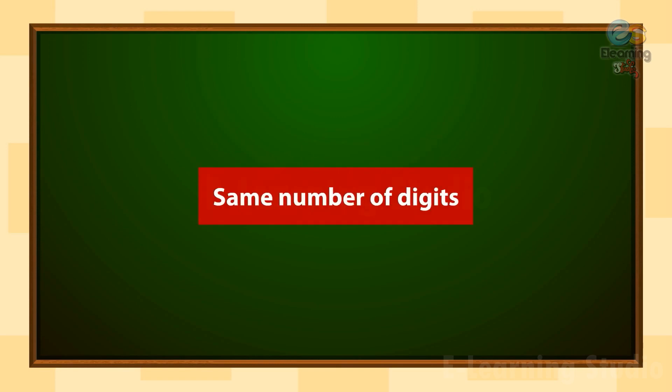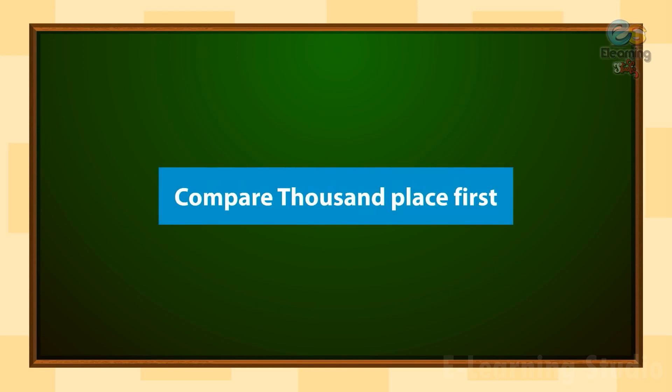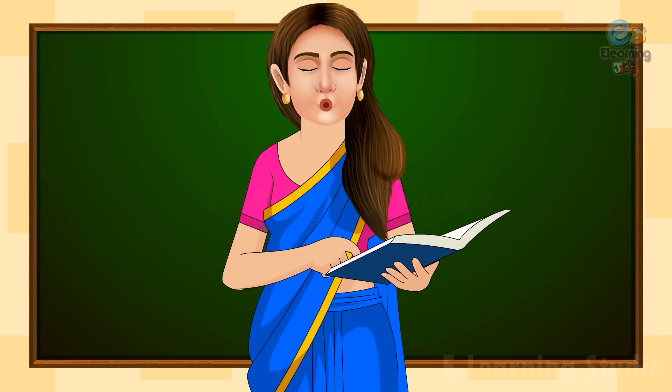Children, if we have the same number of digits, then what do we do? For this, first we compare the thousands place. Let's take an example, children.